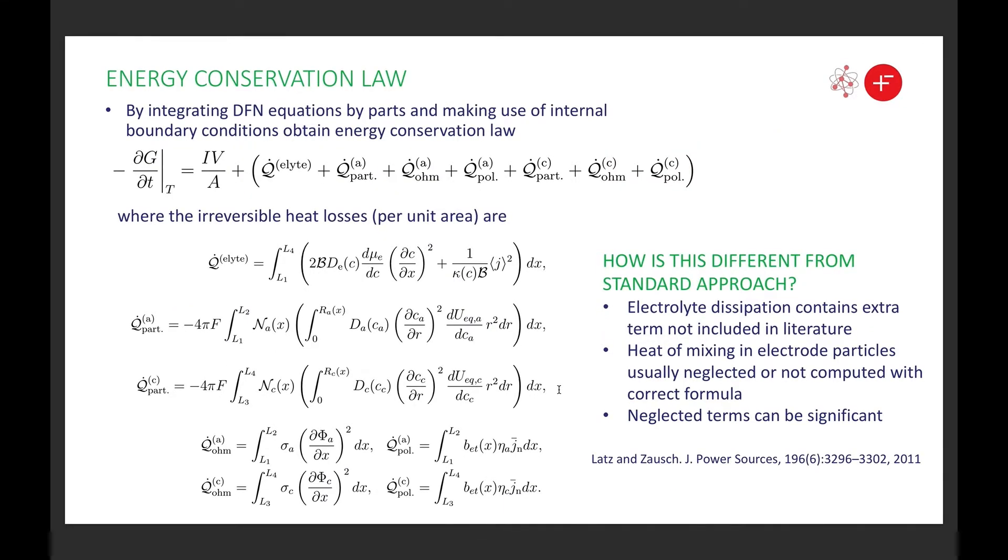It turns out that if you go back to the Doyle-Fuller-Newman equations and you do lots of integrating by parts and make use of the internal boundary conditions, you can demonstrate that this energy conservation law is a consequence of the Doyle-Fuller-Newman model. So here you see on the left-hand side this is the rate of change of the Gibbs free energy of the cell. The rate of change of Gibbs free energy of the cell is equal to the power output of the cell plus a load of energy loss terms, irreversible energy loss terms which are associated with irreversible heating.